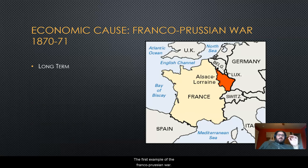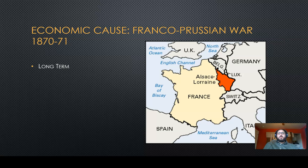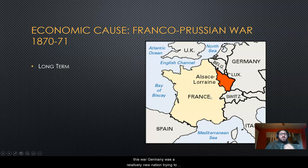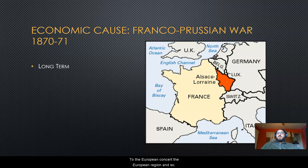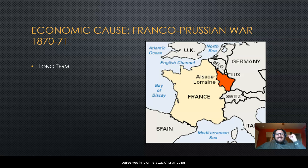The Franco-Prussian War is a long-term cause because it happened in 1870 and lasted until 1871. This war was between Germany and France. At the time, Germany was a relatively new nation trying to prove itself to the European continent. After Germany struggled with unifying and coming together, they eventually decided the best way to make themselves known was by attacking another country.